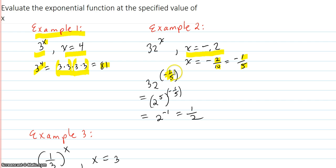And 32 to the x is 32 to the negative 1 fifth. 32 is 2 to the 5th raised to the negative 1 fifth power. That's 2 to the negative 1, which is 1 half.